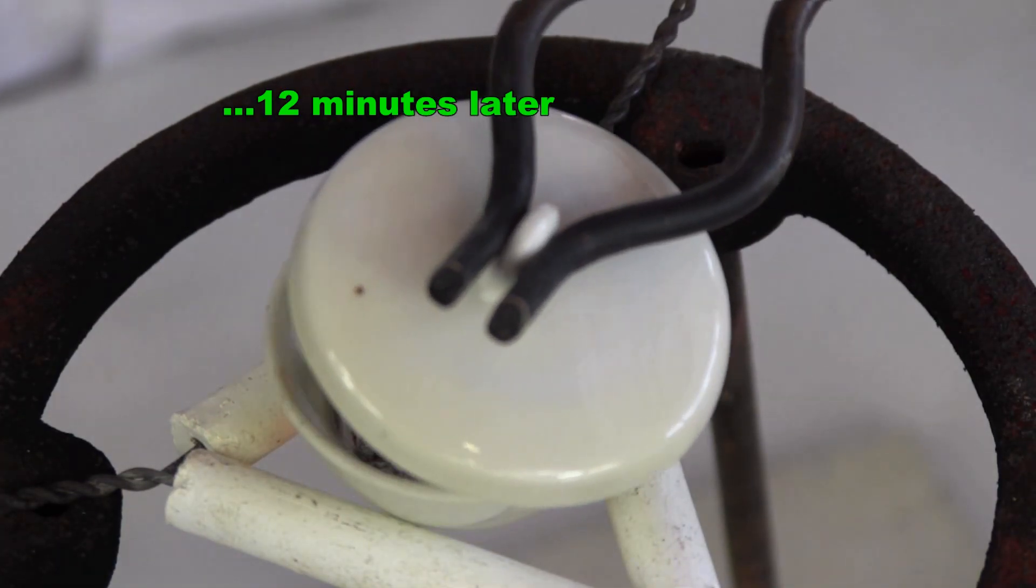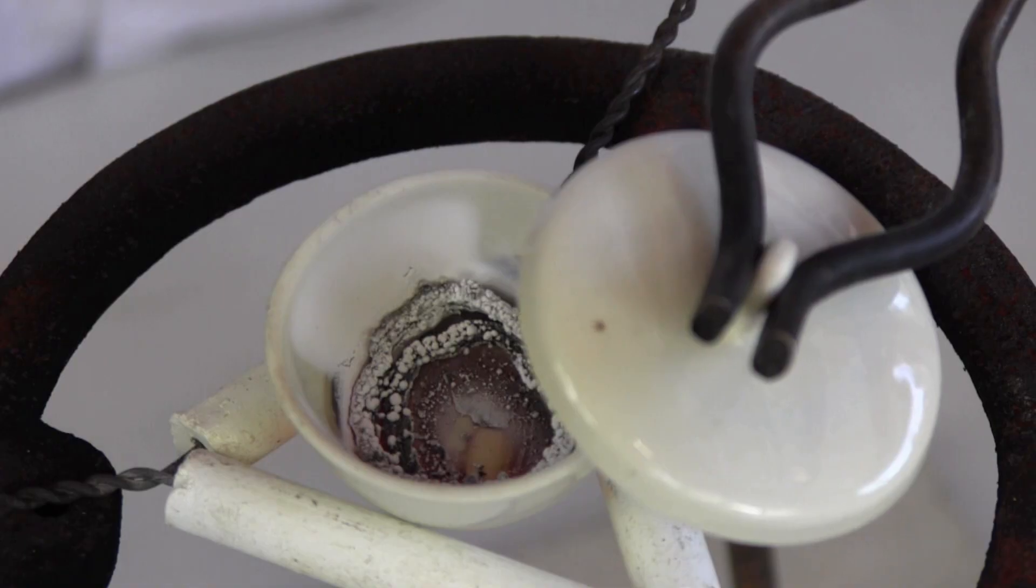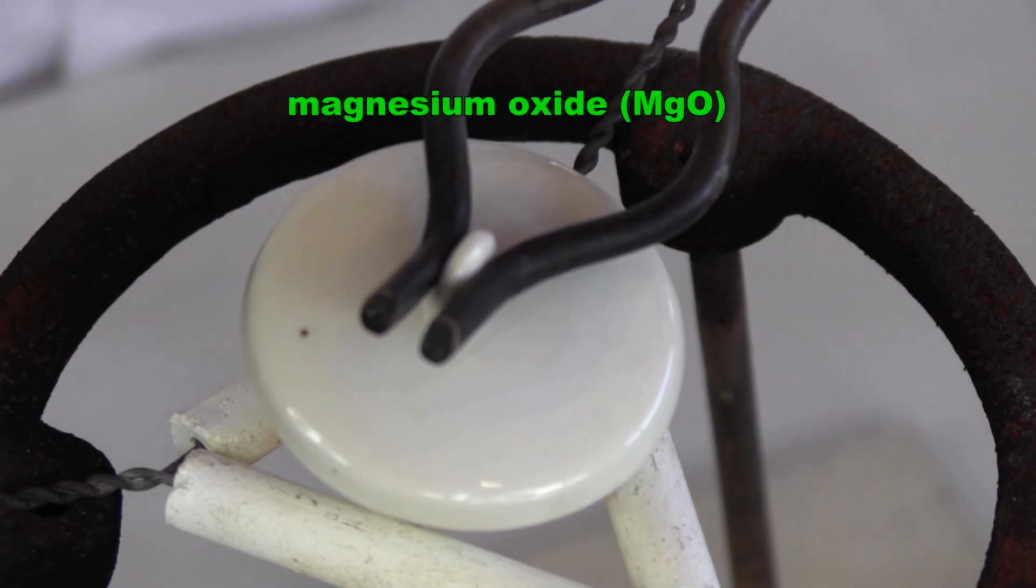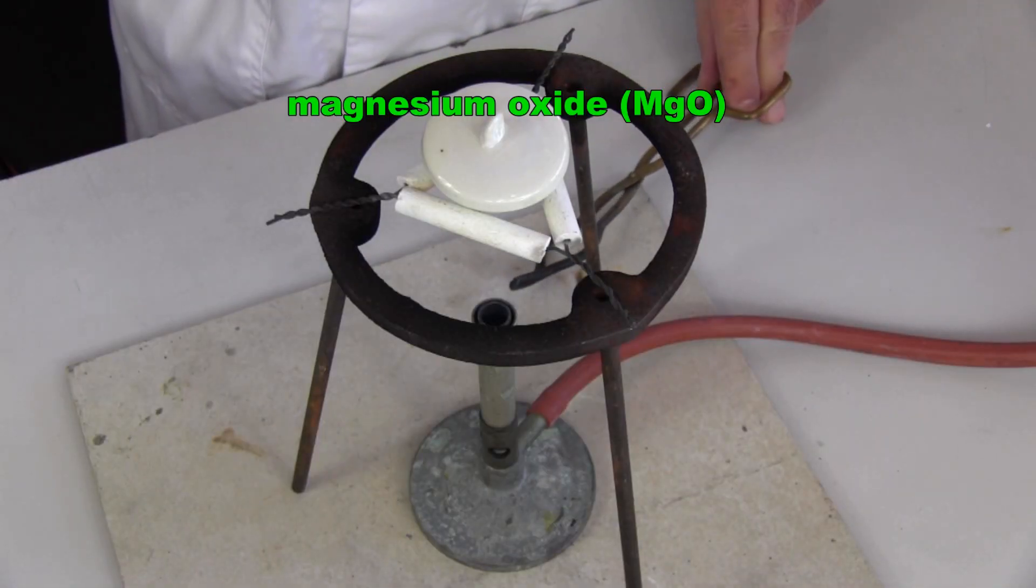The magnesium metal eventually turns into a whitish powder, which is called magnesium oxide because the magnesium atoms and oxygen atoms from the air have joined together.